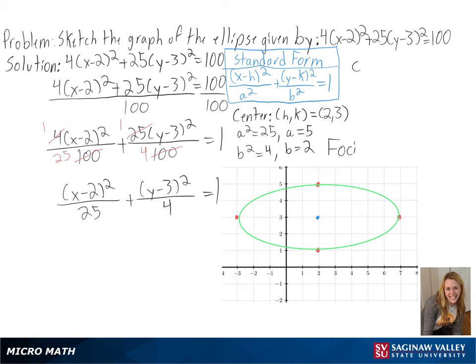If needed, we can also find the foci of our ellipse by finding c, or the square root of a² - b². By plugging in our values, we get the square root of 21, or around 4.58 on either side of our center. And with that, our ellipse is finished.